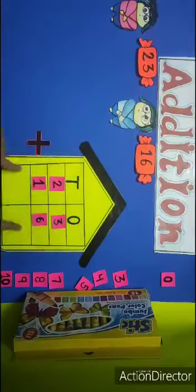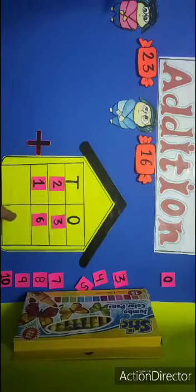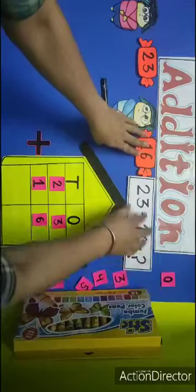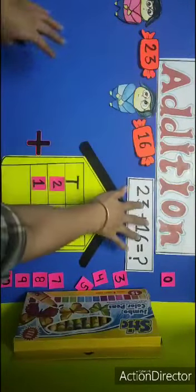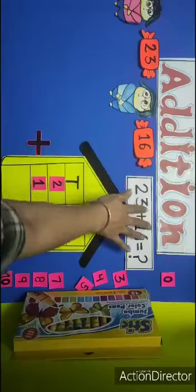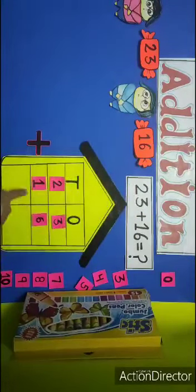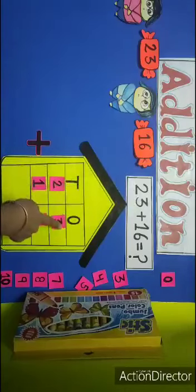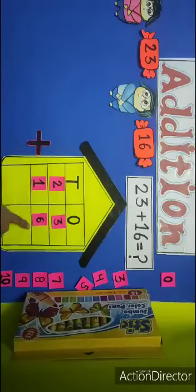Now, we are going to add the number 23 plus 16. This is our first problem that we are going to solve. 23 plus 16. So, we will write in this form 23, 16, in this way. Okay.